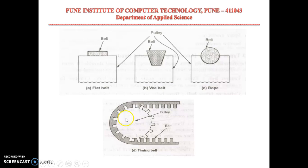Another drive is a timing belt drive. Timing belts have teeth across their inner circumference. The drive is transmitted by means of teeth instead of friction. Since teeth are used for power transmission instead of friction, there will be no slip.